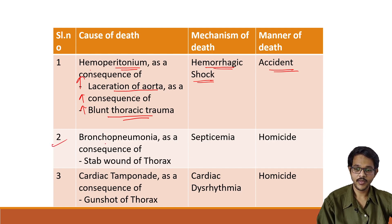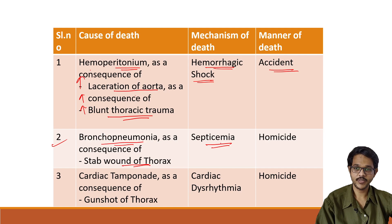One more example is bronchopneumonia. This is a terminal event which was caused by a stab wound of the thorax — a knife was stabbed into the chest leading to bronchopneumonia. The mechanism of death is septicemia due to infection following the injury. The manner of death is homicide, as one person was trying to stab another person.